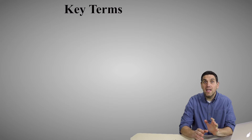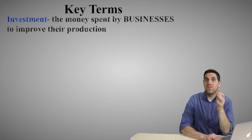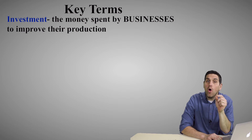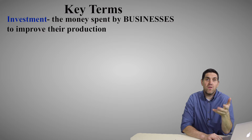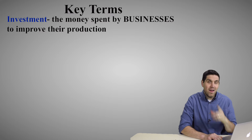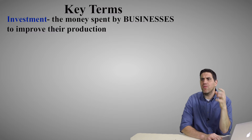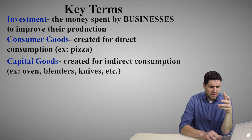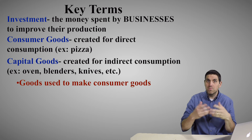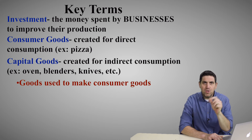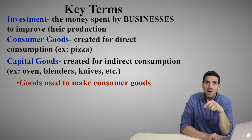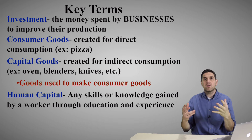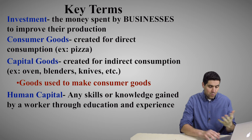There are a couple of other key terms to cover. In economics, investment is when a business buys machines, tools, and capital for their own business — things to improve their business. Capital is not money. There are two types of goods: consumer goods, which are made for direct consumption like pizza, and capital goods, which are tools and machines to produce stuff — like blenders, ovens, and knives for a pizza company. There's also human capital, which is the knowledge and skills required to produce things, like a doctor going to school.